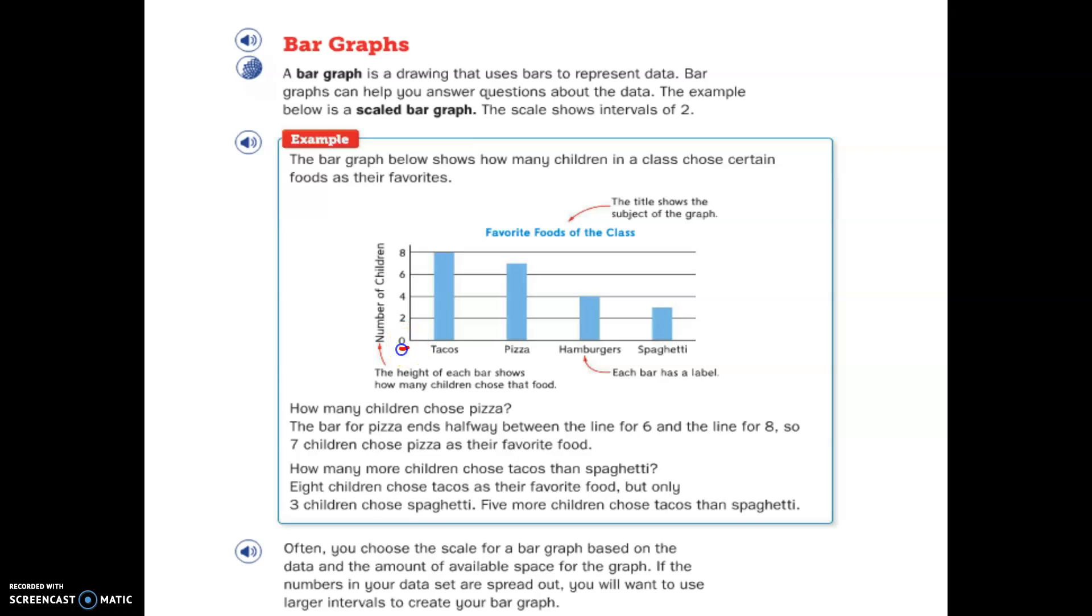So when they're talking about the scale of a bar graph, it's usually along this line here, and this bar graph is going by 2. So 0, 2, 4, 6, 8. Not all bar graphs go by 2. Some might go by 1, some might go by 5, some might go by 10s. It all depends on what data you're collecting and how you want to present it.